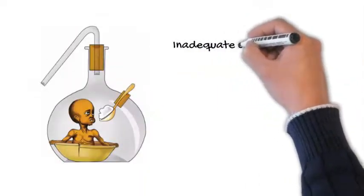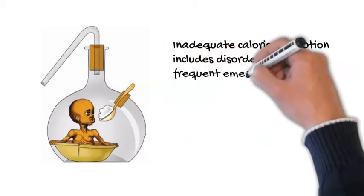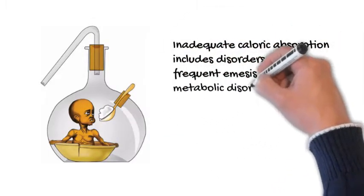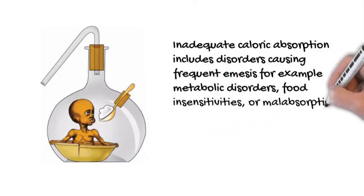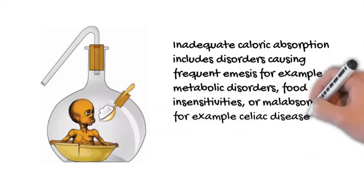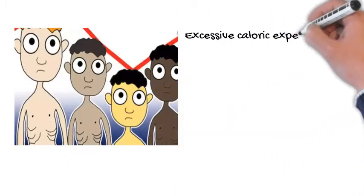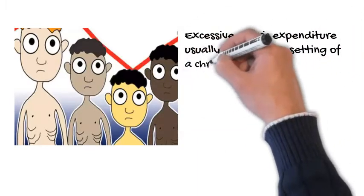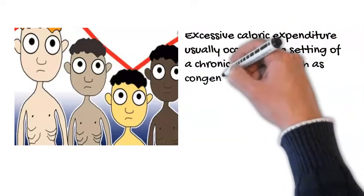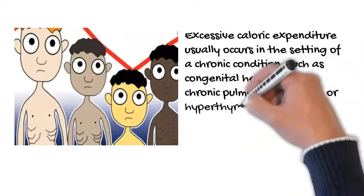Inadequate caloric absorption includes disorders causing frequent emesis — e.g., metabolic disorders, food insensitivities — or malabsorption, e.g., celiac disease, chronic diarrhea, or protein-losing enteropathy. Excessive caloric expenditure usually occurs in the setting of a chronic condition, such as congenital heart disease, chronic pulmonary disease, or hyperthyroidism. In these instances, FTT often develops during the first 8 weeks of life.